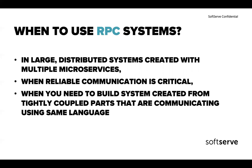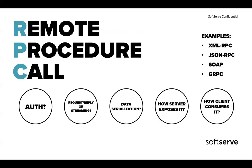In large distributed systems created with multiple microsystems — even before microservices were popular — RPCs were great. In one of our projects, we're using RPCs to communicate with a Java library, calling it from Node.js code, using RPC2 to call Java and get information. When you need reliable communication and want to make sure two points are connected, that's where you want to use RPC systems — especially for tightly coupled systems where you just want data flowing from one part to another, particularly if you're using the same language.